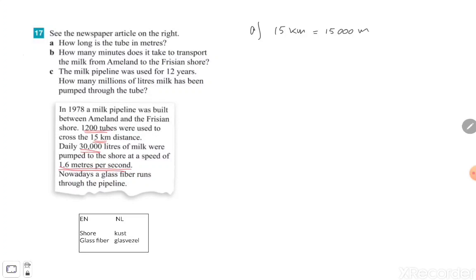And we needed 1,200 tubes to have that distance of 50 kilometers. So if we divide the 50,000 with the 1,200 tubes, then you know the length of just one tube. And if I calculate that one, you get 12 and a half meters. Don't forget the unit behind your answers.